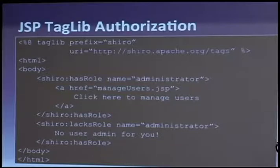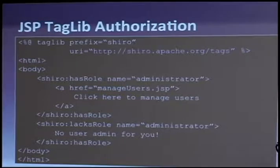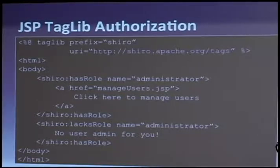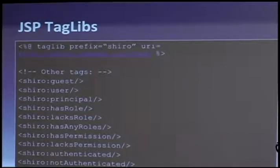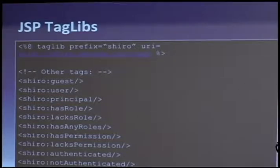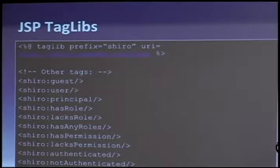Here's how you might use some of the JSP taglibs. Shiro has a taglib — in this case given the prefix 'shiro'. We're showing that a particular link to manage users is only visible if you have the administrator role. If you lack the role, we'll show some other text or buttons. A common scenario: if they're a guest, show them the login link; if they're a user, show them a 'welcome Tony' kind of message. You can check for permissions, roles, and see if they're authenticated or not. All of this has been replicated as of late in the trunk in the JSF support, so it should work fine for JSF users.